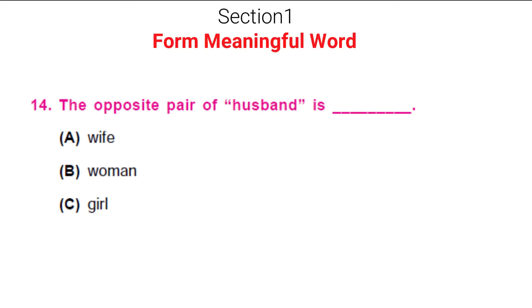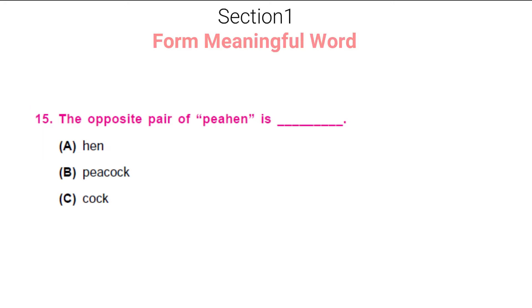Now in the next section, give me the gender opposite pair for husband. Choose from these options — come on, think. Yes, you're right, it's wife. So husband's opposite gender is wife. How about peahen? Can you tell me the gender opposite of peahen? Well, it's peacock — peacock is male and peahen is female.